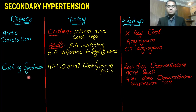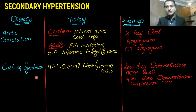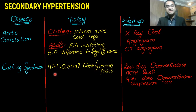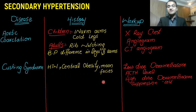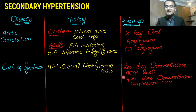Cushing syndrome is due to excess cortisol secretion. That excess cortisol results in fluid retention leading to hypertension, as well as central obesity and moon facies. For the workup, you need a low-dose dexamethasone suppression test, ACTH levels, and a high-dose dexamethasone suppression test.